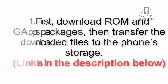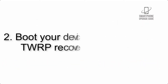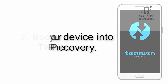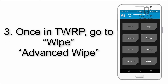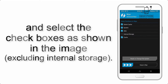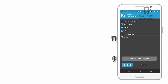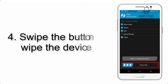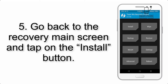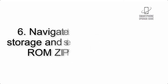Step 2: Boot your device into TWRP recovery. Once in TWRP, click on Wipe, then Advanced Wipe, and select the checkboxes as shown in the image, excluding internal storage. Step 4: Swipe the button to wipe the device.